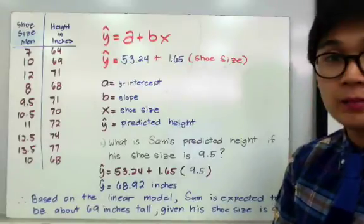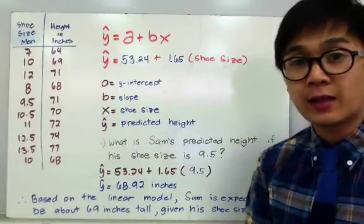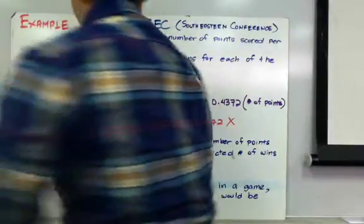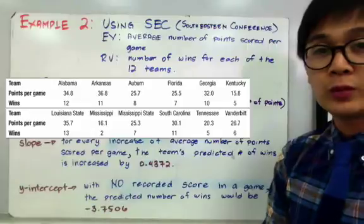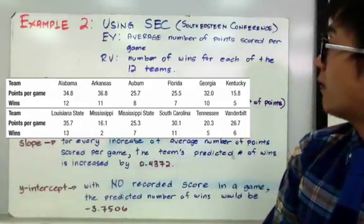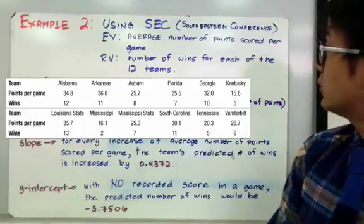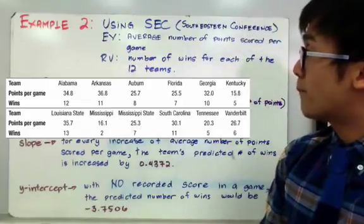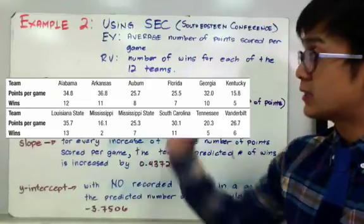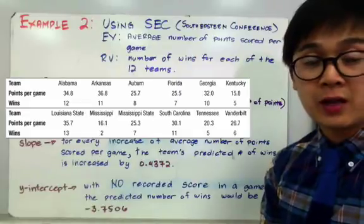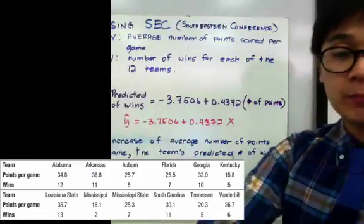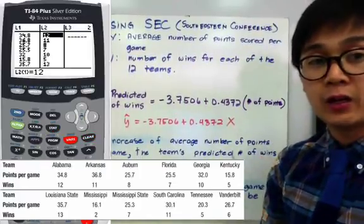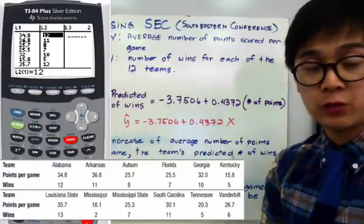How are we going to find the value of a and b using our calculator? Let's use a second example as our experiment. We're going to use the same data set from our previous lesson, wherein EV is the average number of points scored per game and RV is the number of wins for each of the 12 teams in the Southeastern Conference football game. To find a and b, we'll use the TI-84 with list 1 for EV and list 2 for RV. Go to STAT, then EDIT, and plug in all values of the explanatory variable in list 1 and the response variable in list 2.